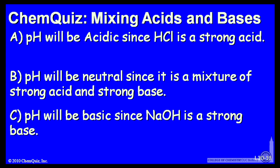Let's look at a possible explanation for the acid strength. A, the pH will be acidic, since HCl is a strong acid. B, the pH will be neutral, since it's a mixture of a strong acid and a strong base. Or C, the pH will be basic, since NaOH is a strong base.